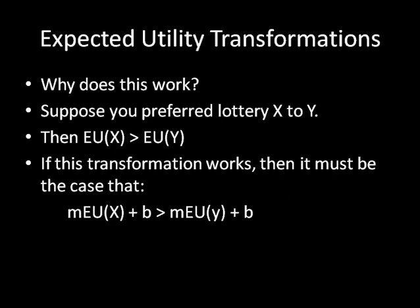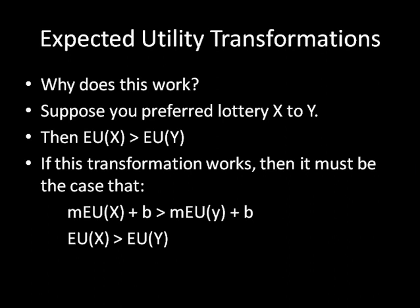So if this transformation works, then it must be the case that m times the expected utility of x plus b is greater than m times the expected utility of y plus b. We can verify this by manipulating the inequality: subtract b from both sides, leaving m times EU(x) greater than m times EU(y), then divide m from both sides, leaving us with just EU(x) greater than EU(y). This holds given our assumption that you prefer lottery x to lottery y.